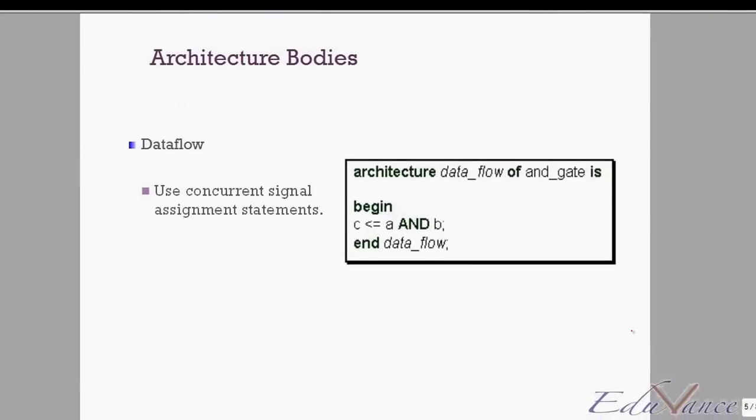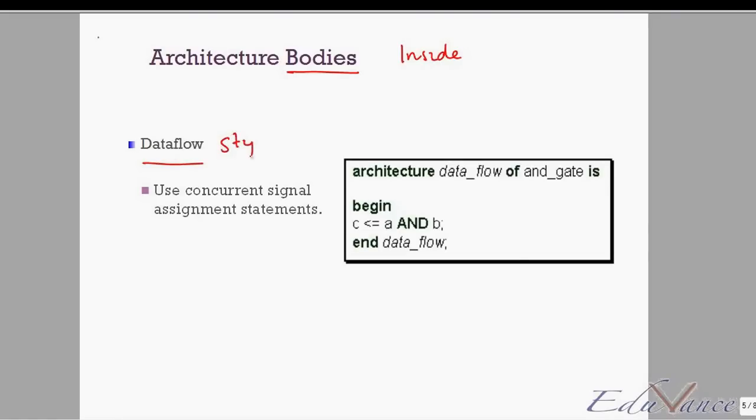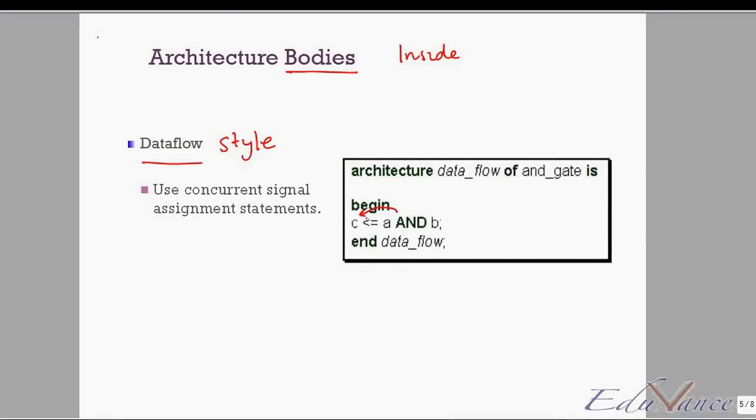So the different types of specifying the architecture body or what goes inside the architecture. First is data flow. In the data flow style of modeling, you would use concurrent signal assignment statements. That is, if I have to specify an AND gate, I would just write C is assigned A and B. If you want to make multiple gates, then you can say C is assigned A and B, you would say X is assigned Y or Z. So all of these statements will execute concurrently or in parallel. So this is the data flow style of modeling where you specify how the data is flowing and from where.